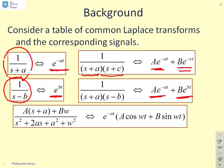I've put in some quadratic denominators which have complex roots. We've got the denominator written as s squared plus 2as plus a squared plus omega squared. This gives us a time domain signal e to the minus at times a cos plus b sine. Because we've got the exponential e to the minus at, this is convergent.